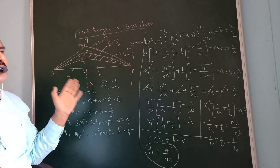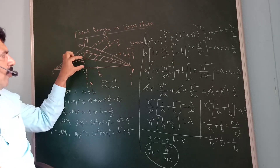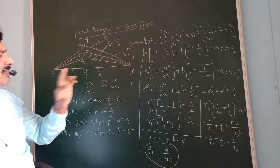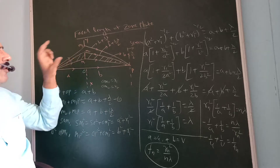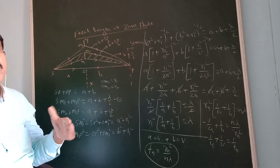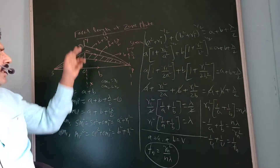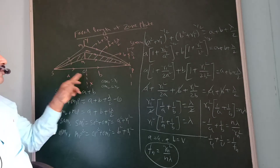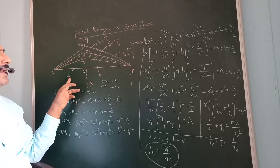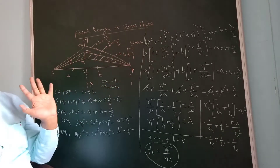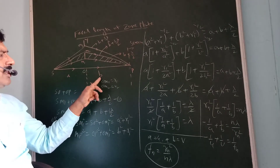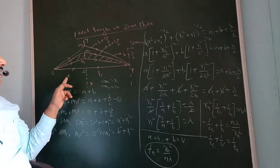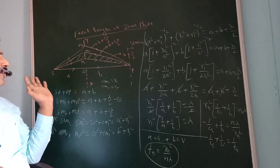X-Y is the section of the zone plate. OM1 is the radius R1 of the first half-period zone, OM2 is R2 the radius of the second half-period zone, and OM3 = R3 is the radius of the third half-period zone. S is the source of light; the distance from S to the zone plate is A, and B is the distance from the zone plate to the screen.